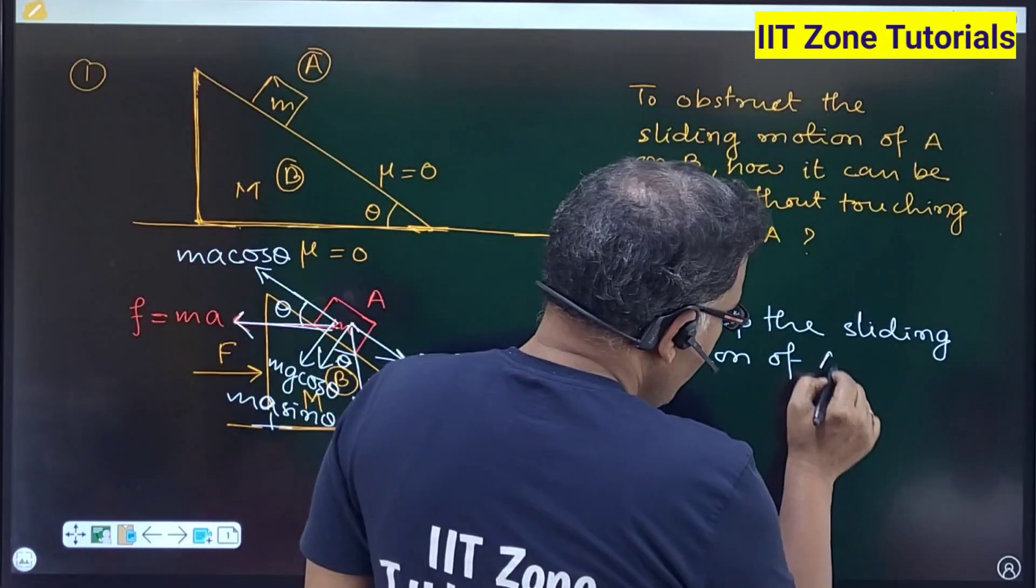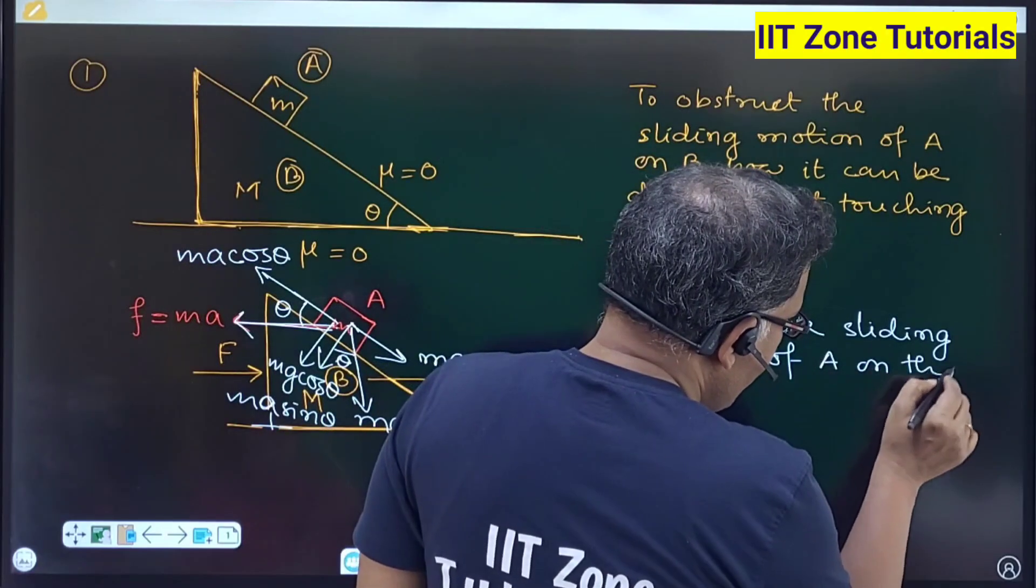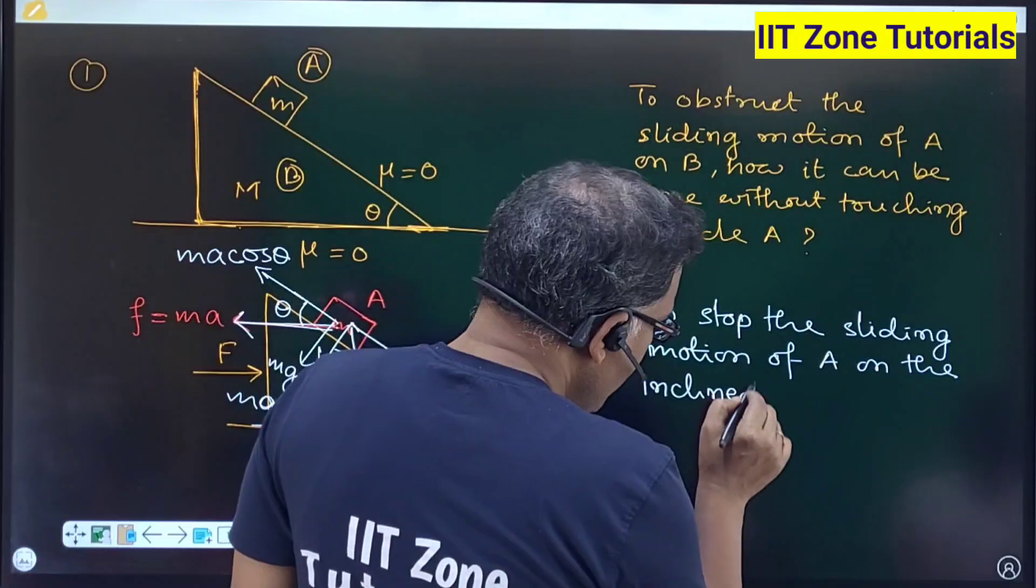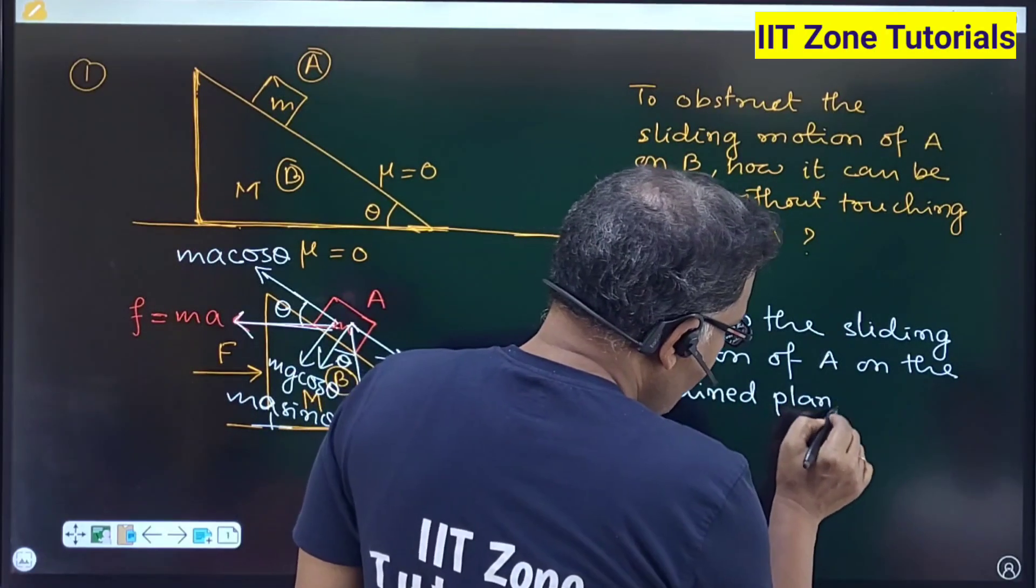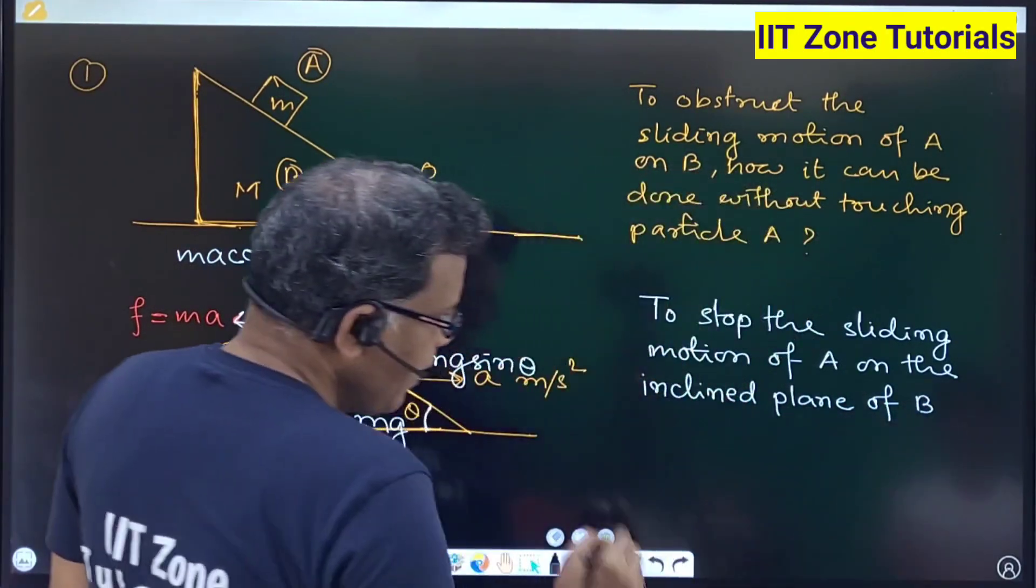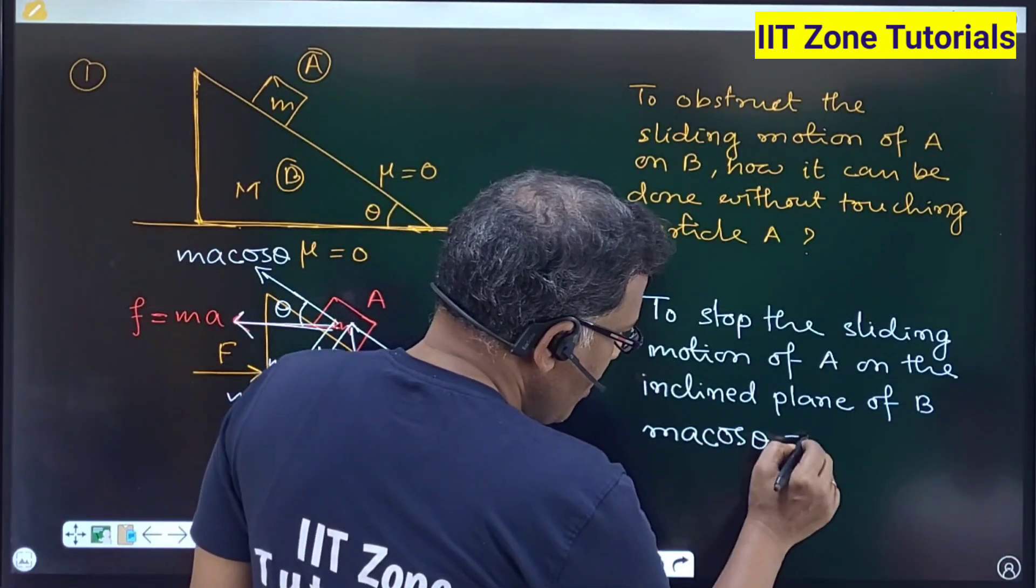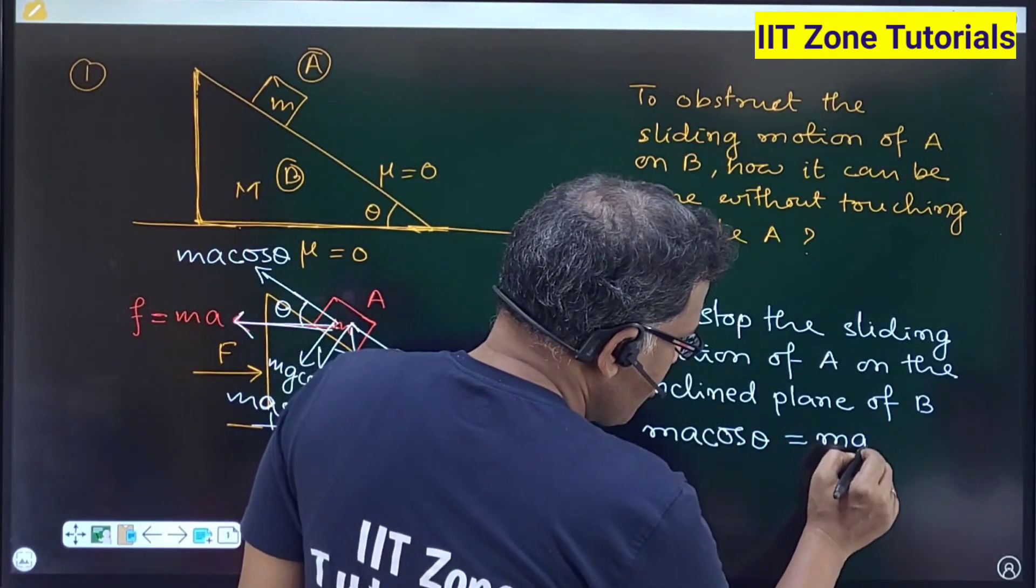of A on the inclined plane of B, M A cos theta, the component of the pseudo force, that should be equal to the actual force due to